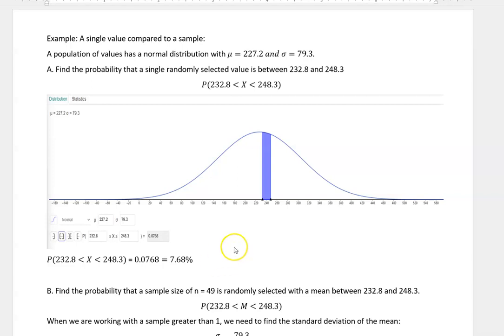All right, so the second one though is finding the probability that a sample size of n = 49 would have a mean between those two same values. So now we're not just taking one, we're taking 49 things and looking at their average.